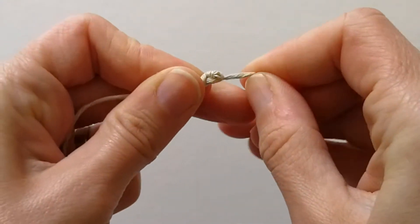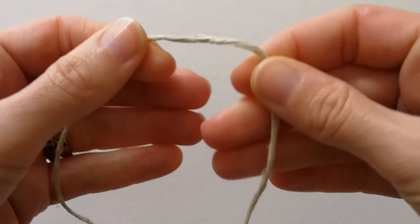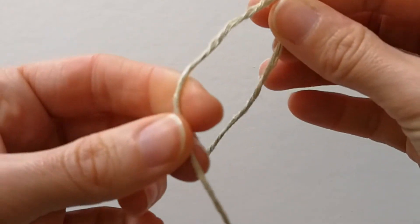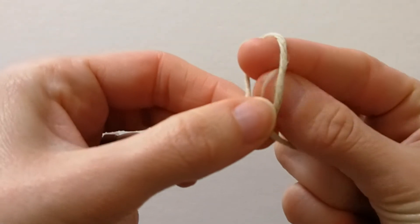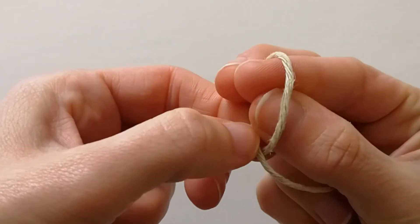Let's do that again. So with the end in your right hand, cross the left over the right. Put your index finger and thumb through the loop.